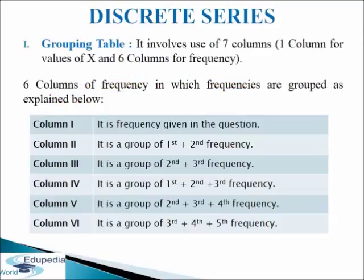The grouping table involves seven columns: one column for values of x and six columns for frequency. Column 1 contains frequencies given against values of x as given in the question. Column 2 contains groups of frequencies in twos starting from the first frequency — that is, first plus second frequency. Column 3 contains groups of frequencies in twos starting from the second frequency, leaving the first frequency — that is, second plus third frequency.